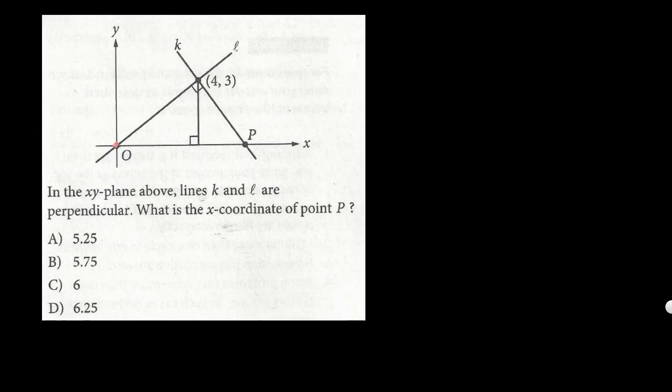We can get the slope for L because the y-intercept is (0,0) and it goes up three units to hit (4,3). So we went up three and right four, so the slope for line L must be 3/4, rise over run. That means the slope for line K should be the negative reciprocal.